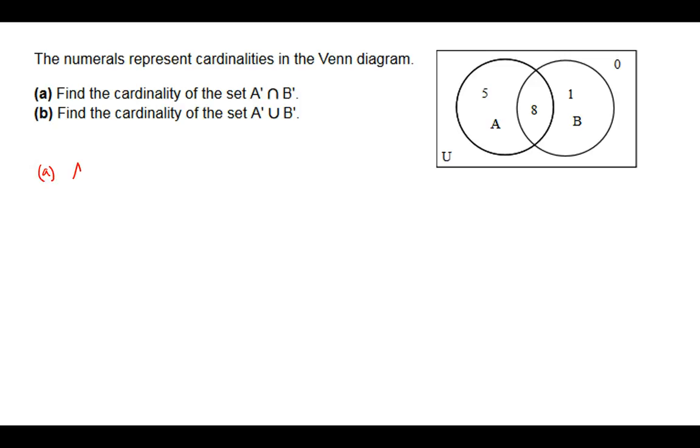So we have A complement, and we're going to intersect that with B complement. What I find helpful is to label the regions. In a two-set Venn diagram, there are four different regions.